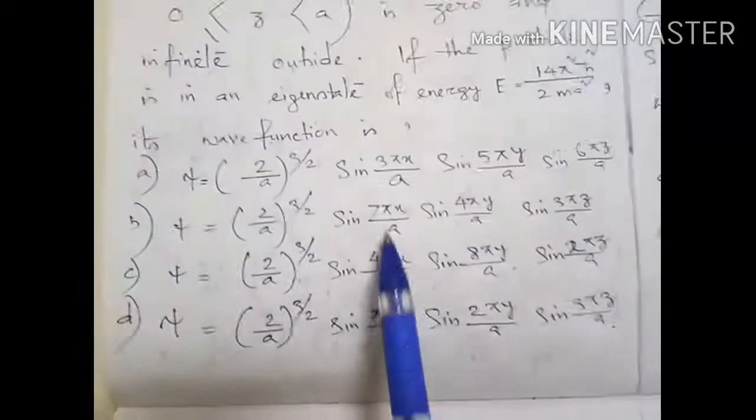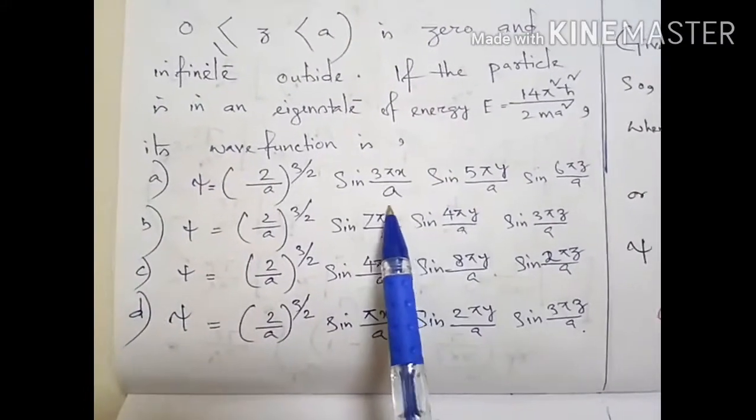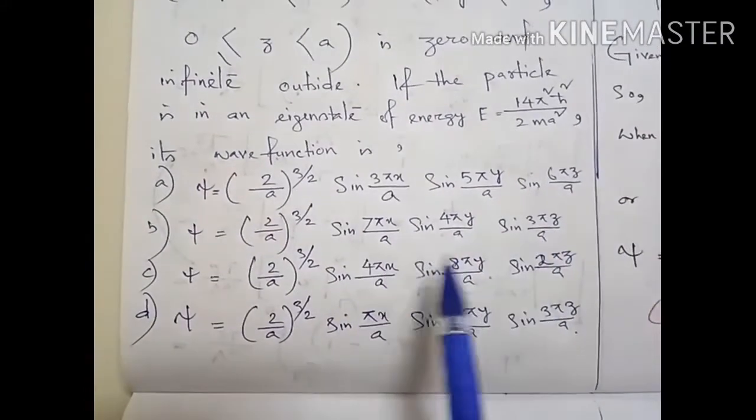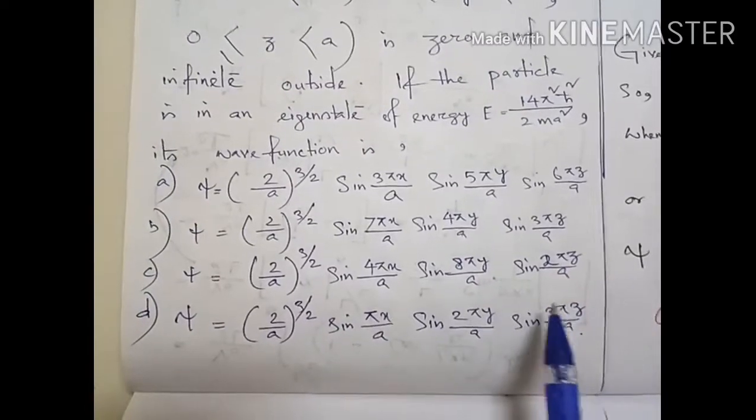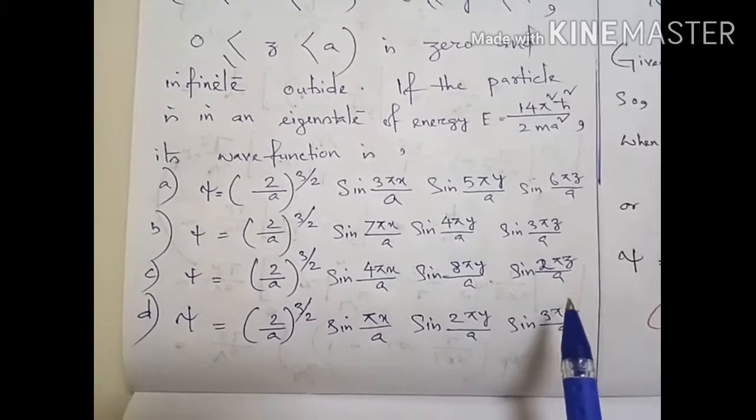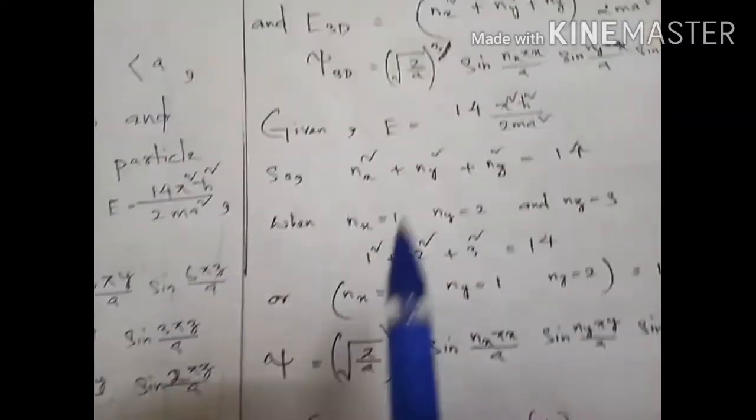According to the options, we can see that 3-5-6 or 3-7-4, 3-4-8-2, 1-2-3. So 1-2-3 is there in the options, so we can choose the value 1-2-3 as their combination will give us 14.